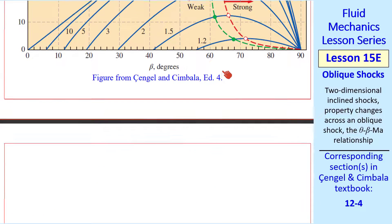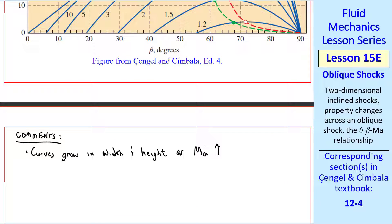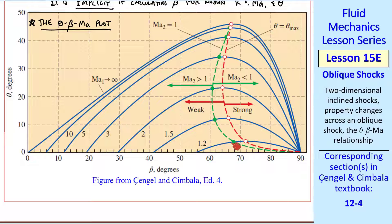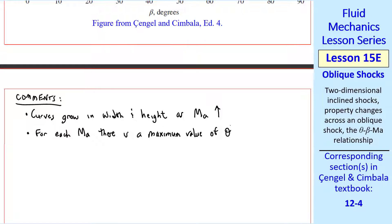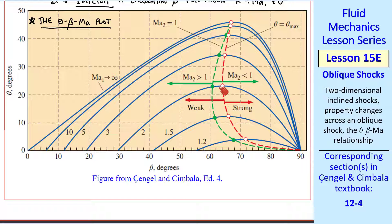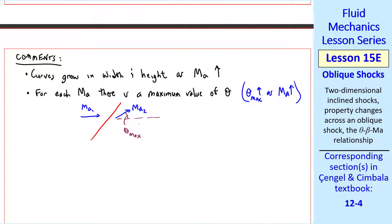I'll make several comments about this plot. First, the curves grow in width and height as Mach number increases. For small Mach number, the curve is short and narrow, but it grows in height and width as Mach number increases. For each Mach number, there's a maximum value of theta, and theta max grows as Mach number grows. These hollow red points represent theta max for each Mach number. You can see that theta max grows as Mach number gets bigger. What this means physically is that the flow can turn at some maximum turning angle, but it can't turn at any angle larger than that.